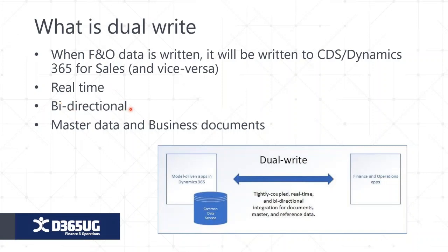This is near real-time and bi-directional. A common question is: can this be done in one direction? Yes — you can define directions at the field level, which I'll show later. You can define it bi-directional, or one-directional either from FNO to CE or CE to FNO. When I say CE I'm referring to the CDS environment. You can also move across master data and business documents — customer groups, payment terms, invoice information — across to the CDS environment.